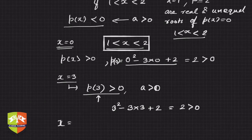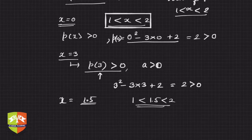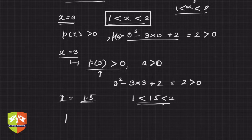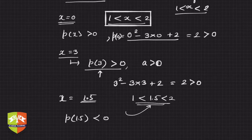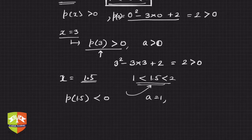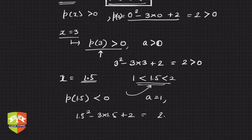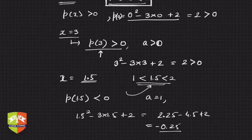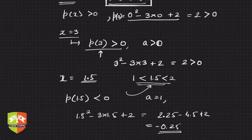Now let's check x = 1.5, which lies between 1 and 2 — the roots of p(x) = 0. So p(1.5) should be less than zero, because 1.5 lies between the roots and a is positive. Calculating: (1.5)² - 3(1.5) + 2 = 2.25 - 4.5 + 2 = -0.25, which is indeed negative. This matches our prediction — p(x) has the opposite sign to a when x lies between the roots.